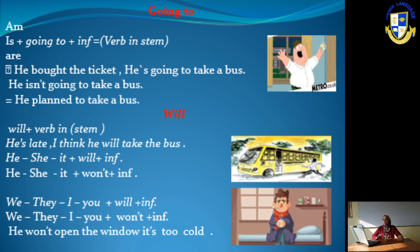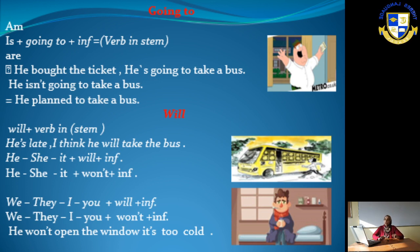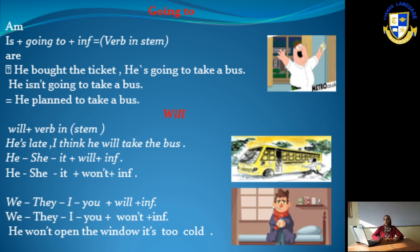Now let's answer some practice questions. Question one: 'Have you got any plans for tomorrow?' If it involves plans decided before speaking, we use 'going to.' Answer: 'Yes, I am going to visit my aunt.'